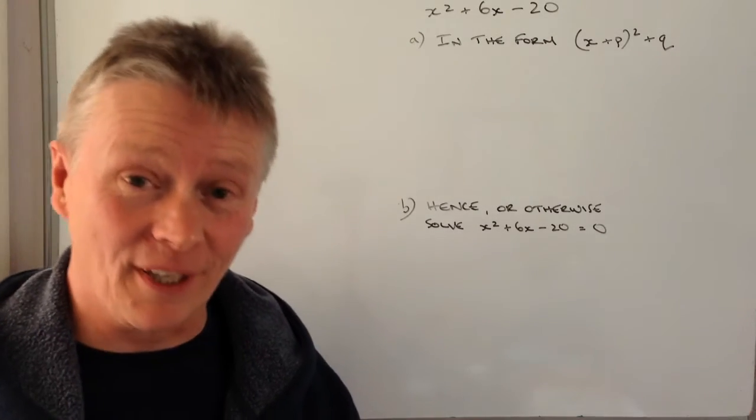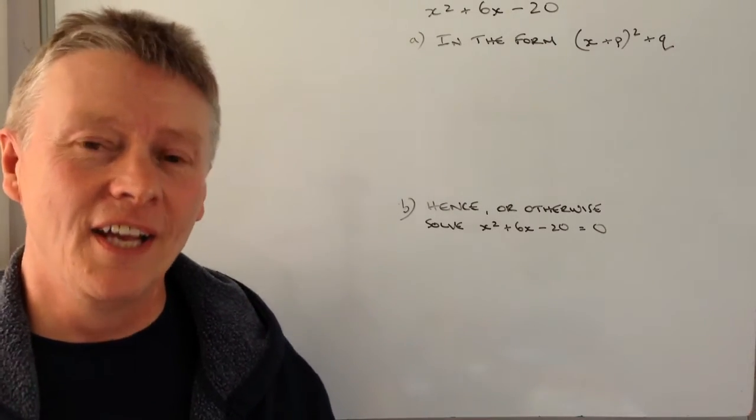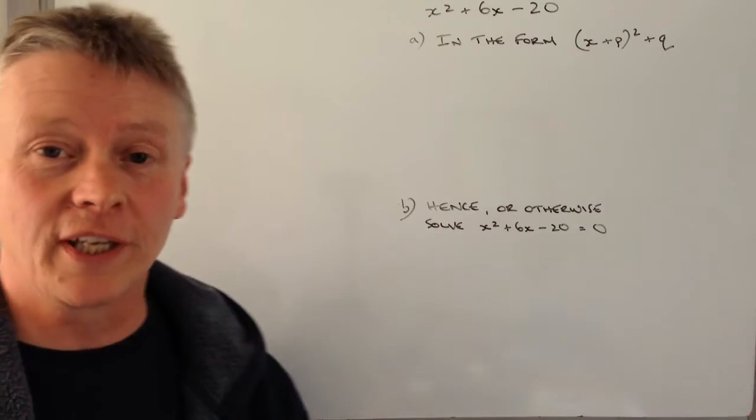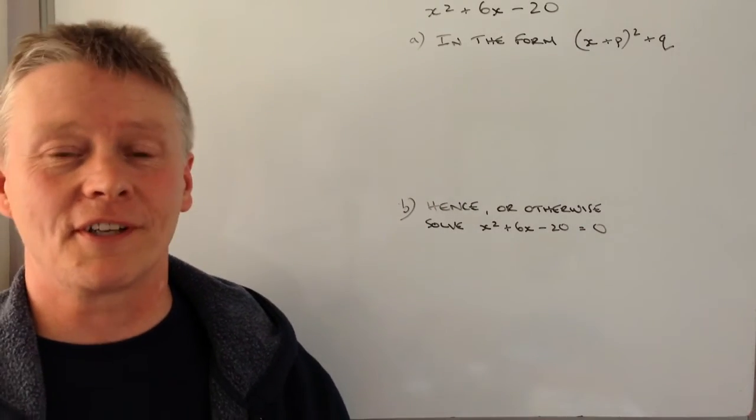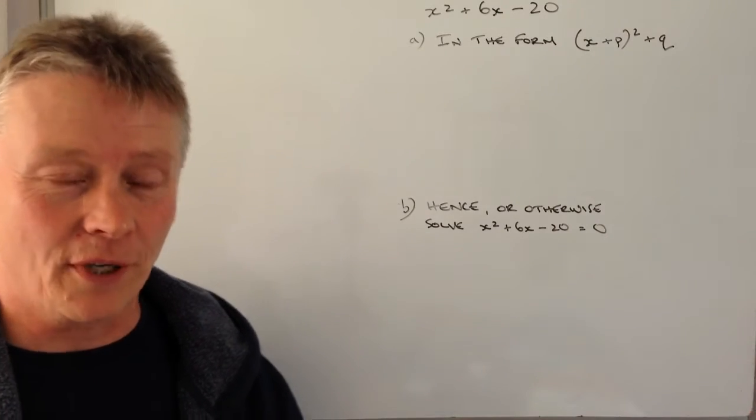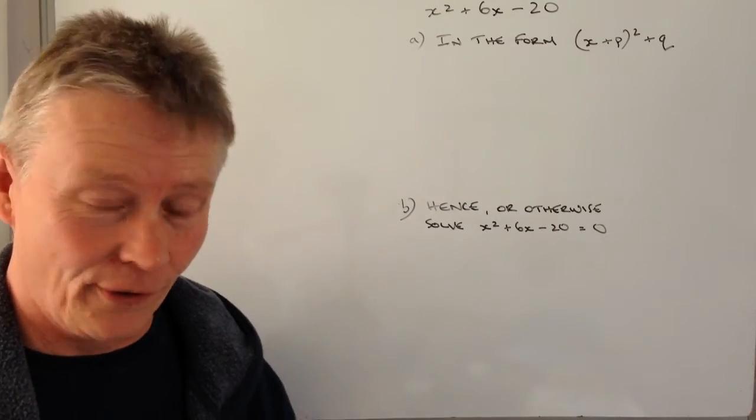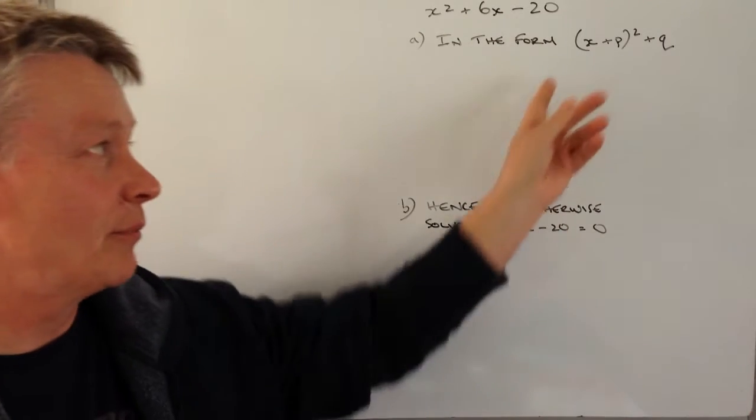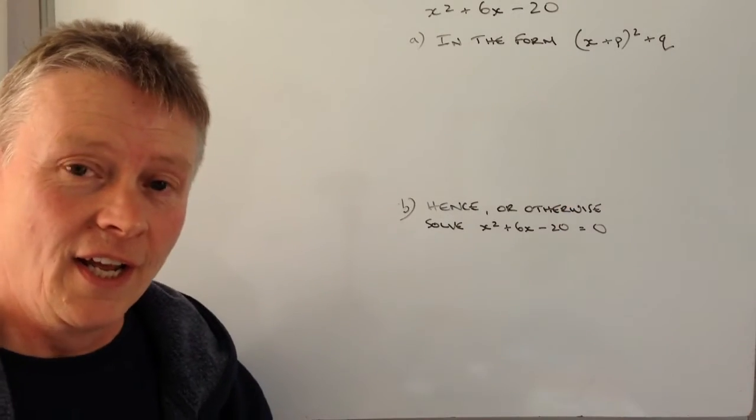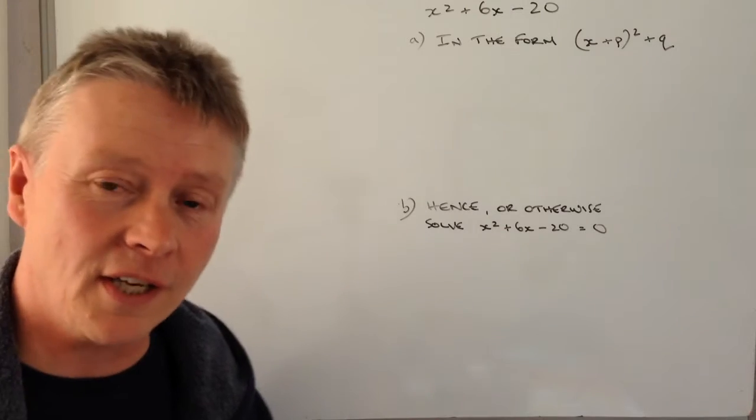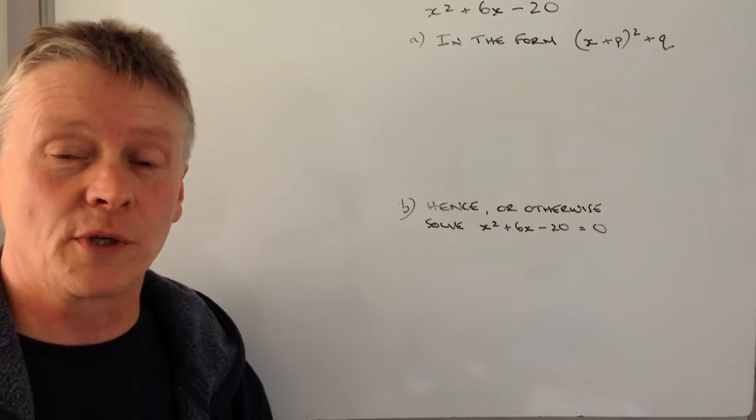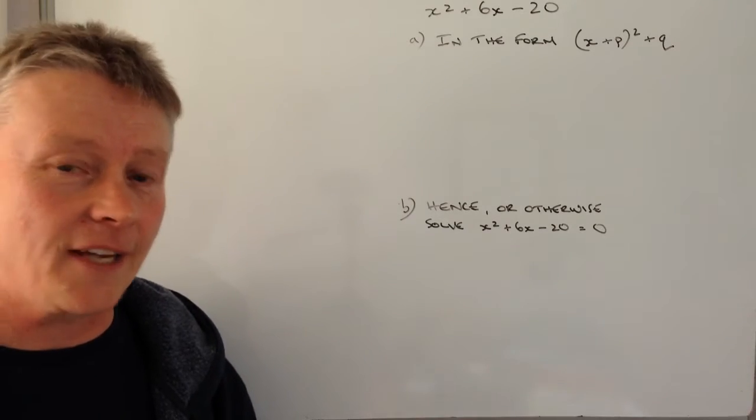Hi and welcome to this playlist on completing the square. In this video, we're going to be looking at this question where we're given x² + 6x - 20 and we're asked to put it into a different form. We're not actually changing the equation, just putting it in a different way. This is called completing the square and it's useful for solving it, in other words working out the two values of x.